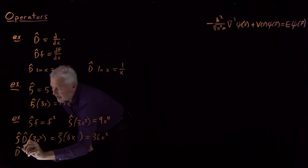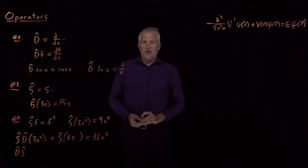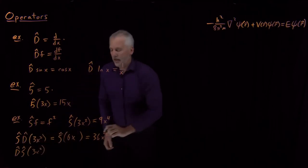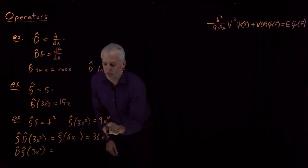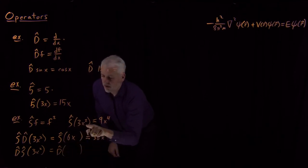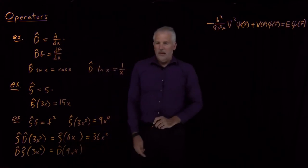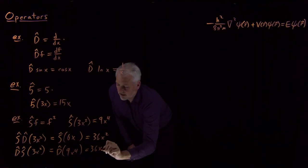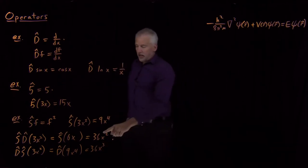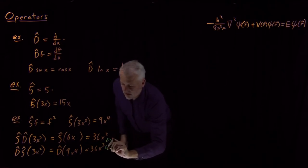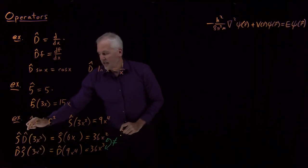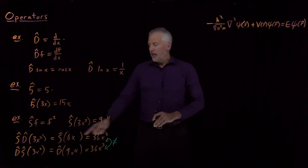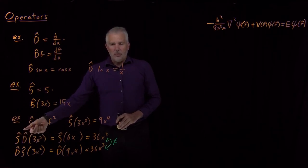I could also ask what happens when I do those in the opposite order on the same function — first square it, then take the derivative. Squaring 3x² gives 9x⁴. Taking the derivative of 9x⁴ gives 36x³. So what I got by squaring first and then differentiating is not the same as differentiating first and then squaring — those two results are not the same as each other.